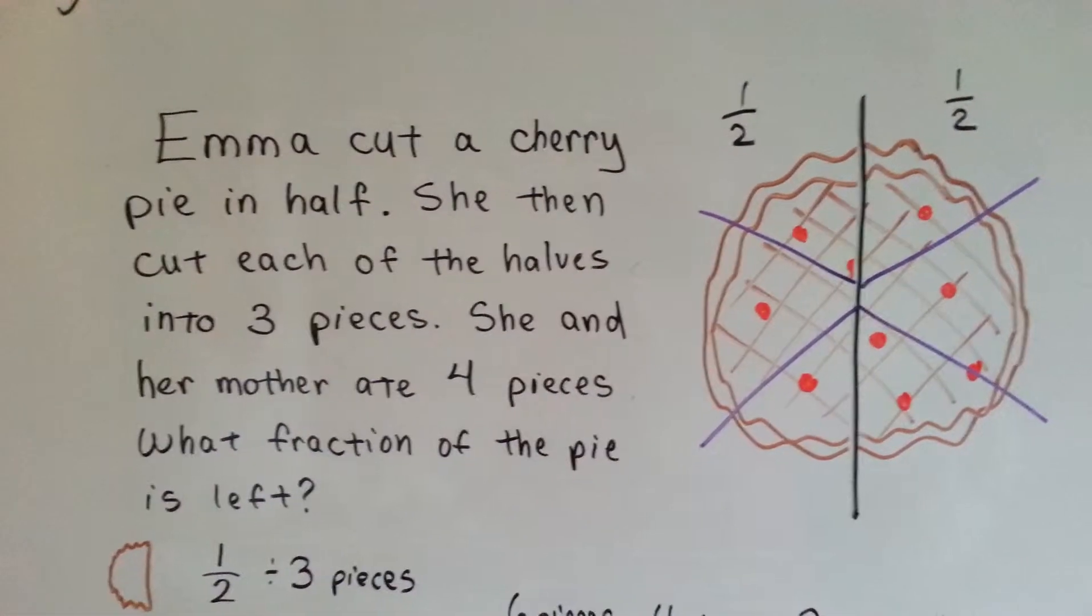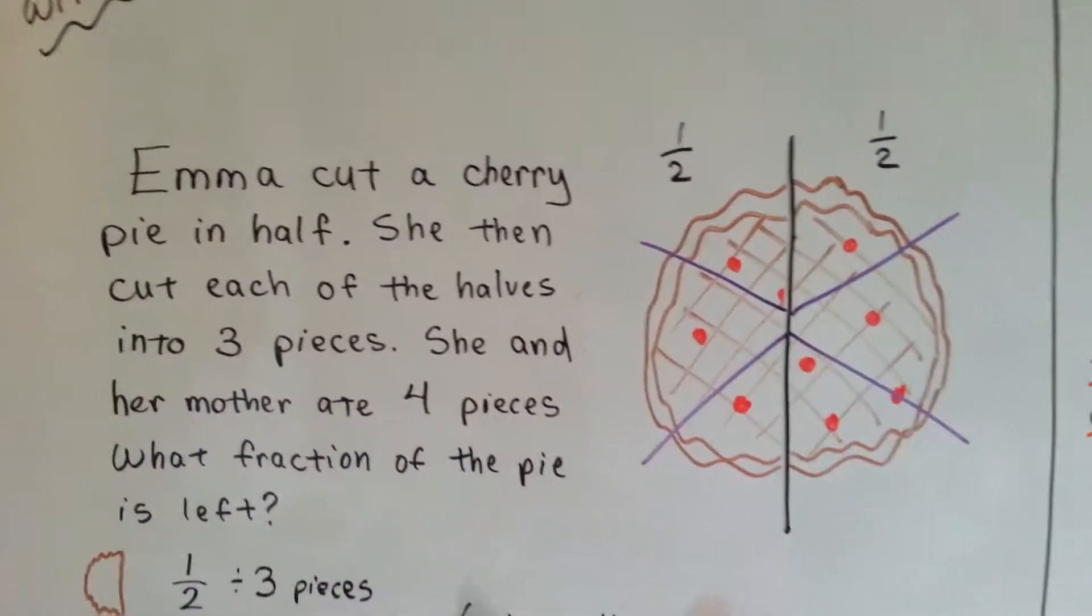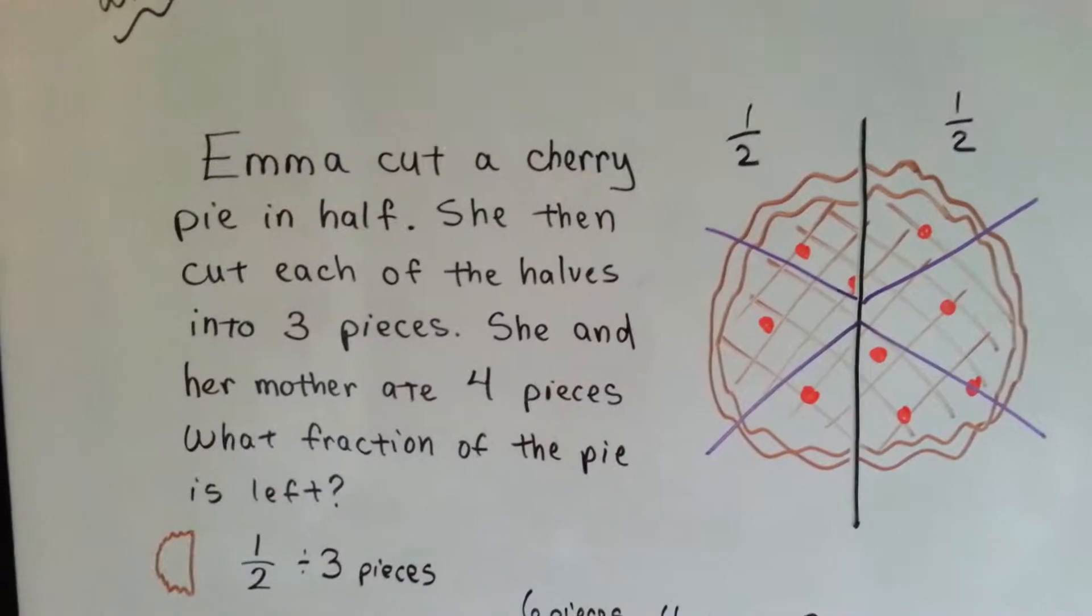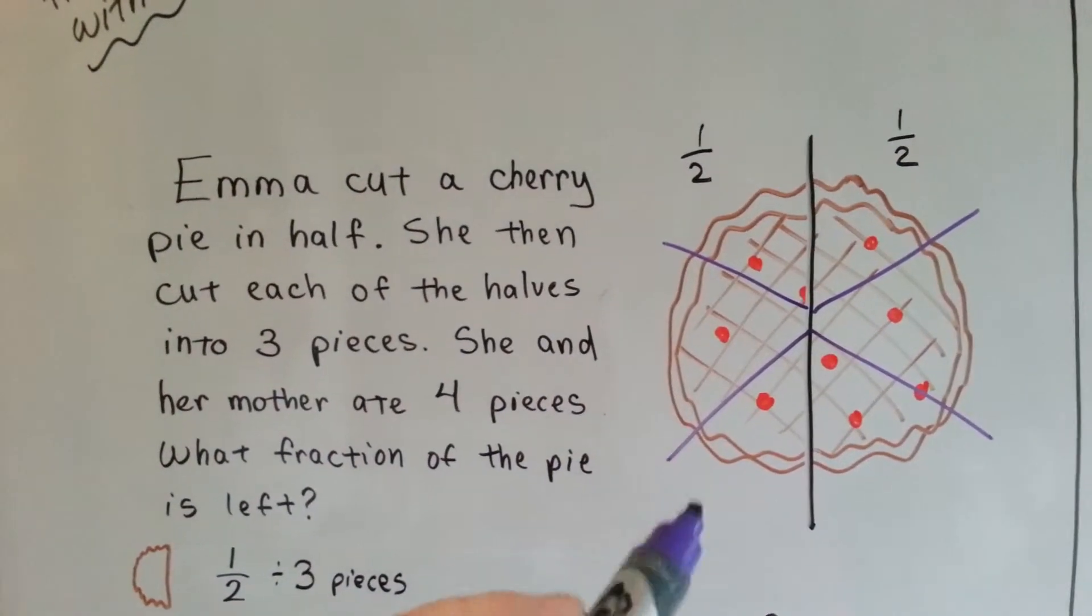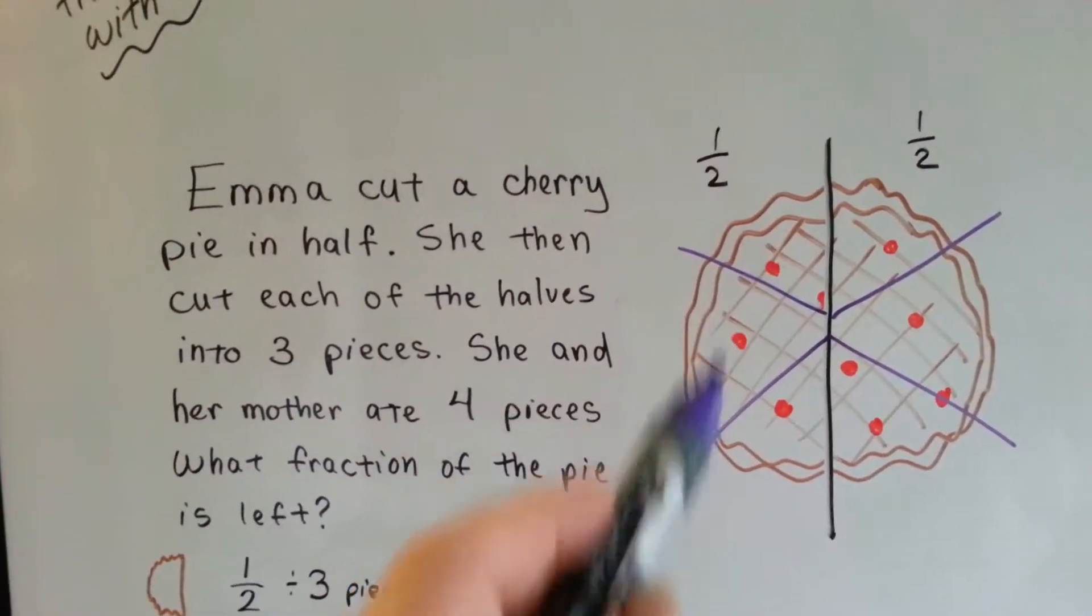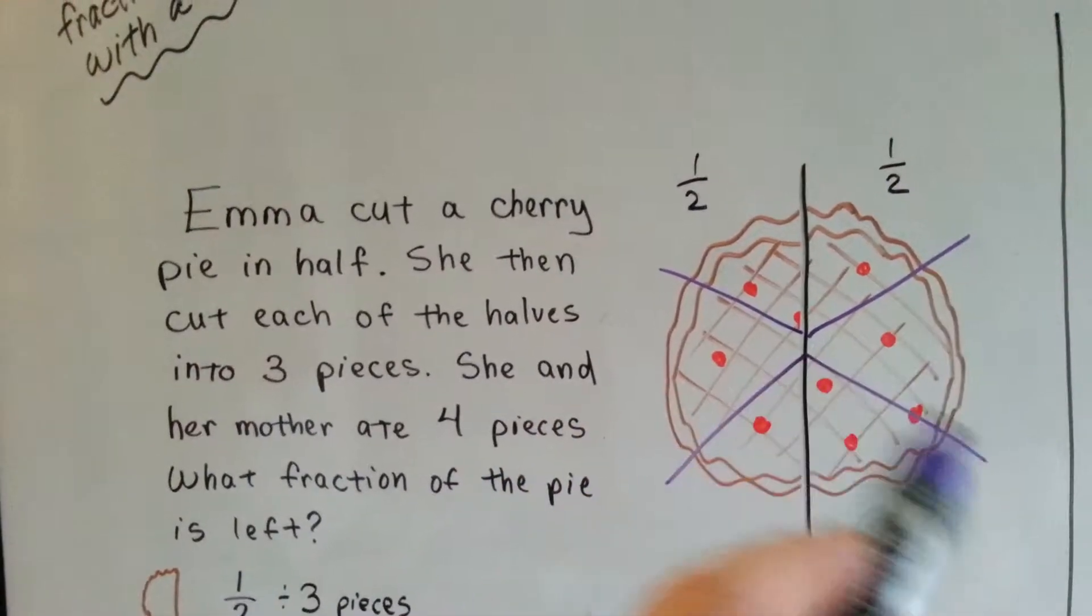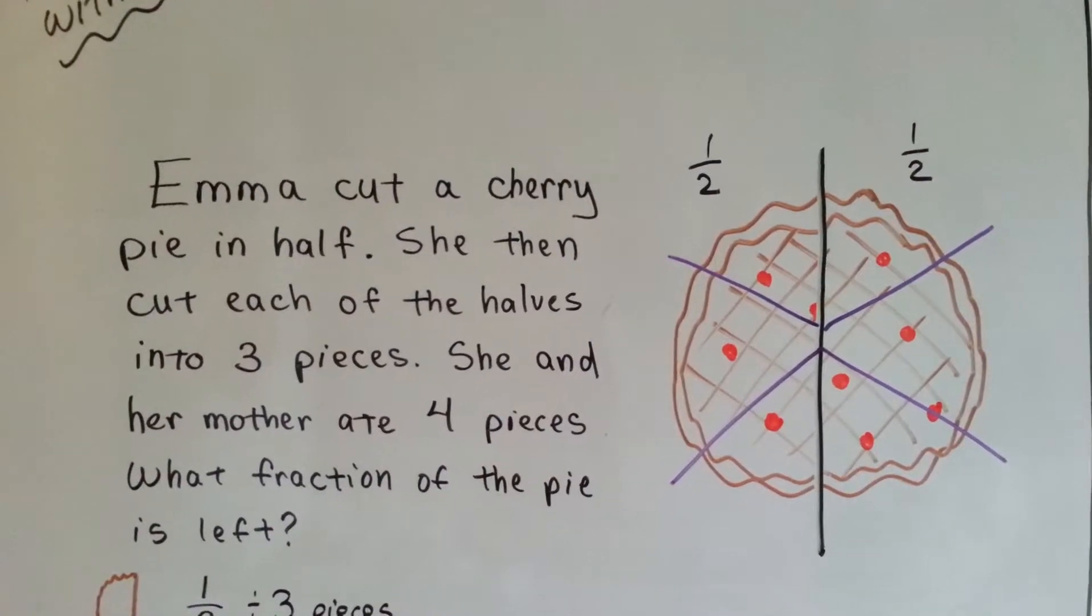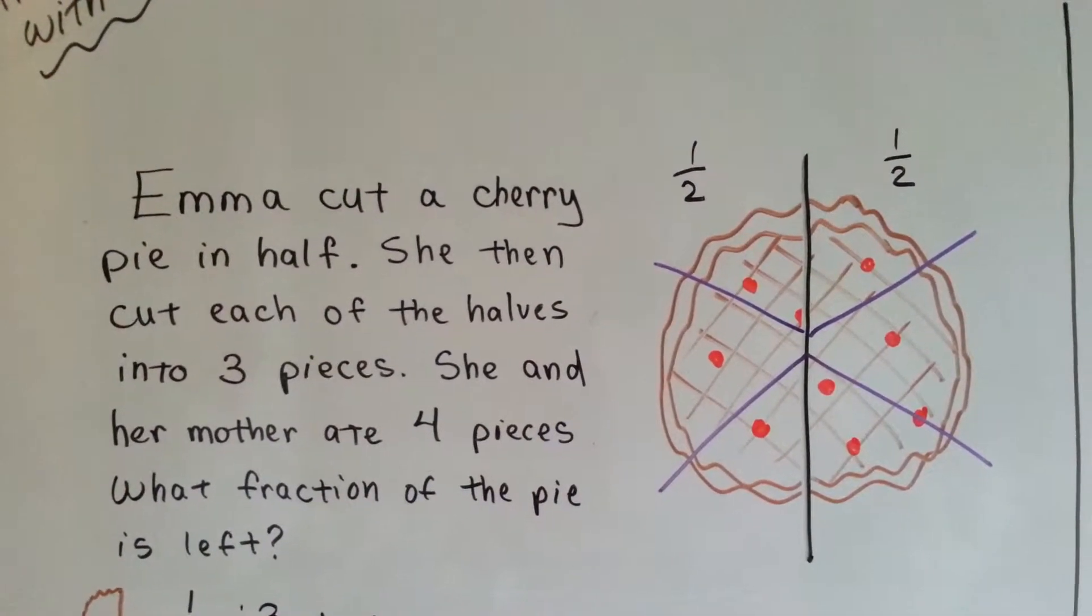Emma cut a cherry pie in half. There's two halves. Then she cut each of the halves into three pieces. Boom, boom. So now there's three pieces in this half. Boom, boom. There's three pieces in that half. She and her mother ate four pieces.